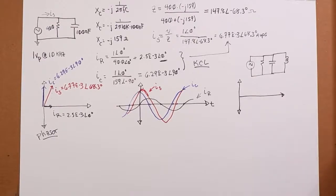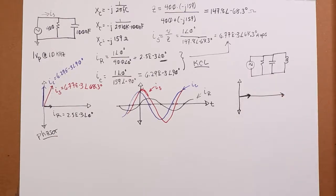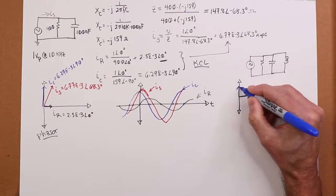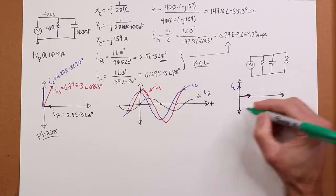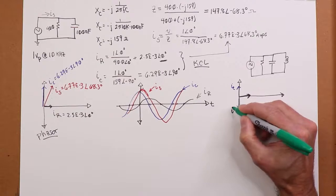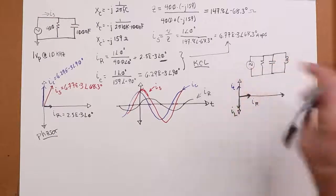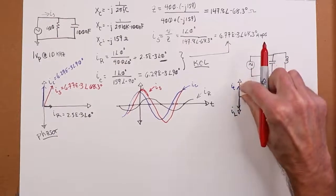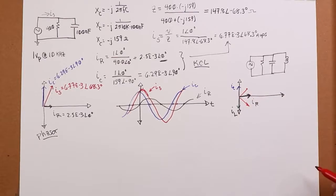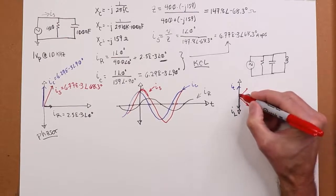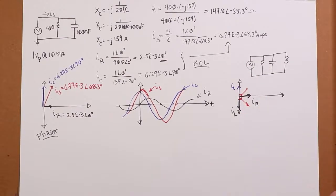a quick sketch of the phasor is going to look something like this. Well, I'll just say the R is out this way. I'll use the same colors. The C would be out like this. And the IL would be down here. And then depending on the precise magnitudes of these, if IC is bigger, we're going to get an IS out here somewhere. If IL is bigger, we're going to get an IS down that way.